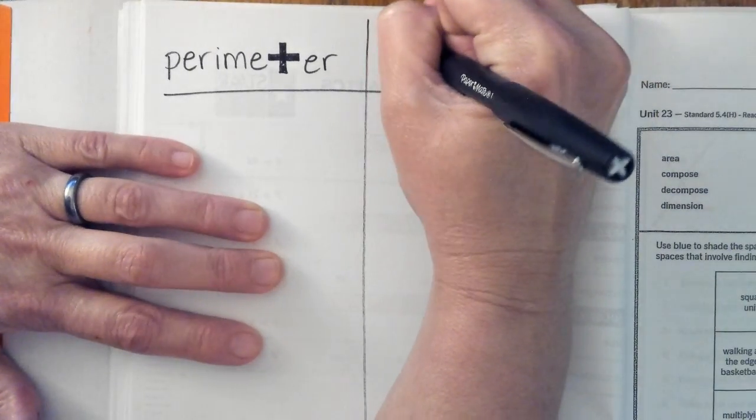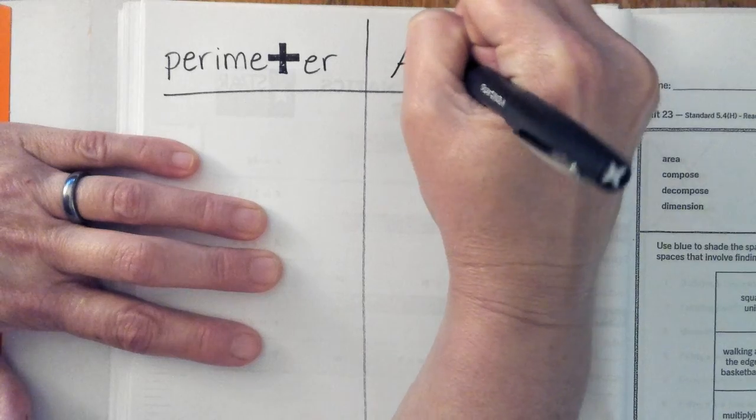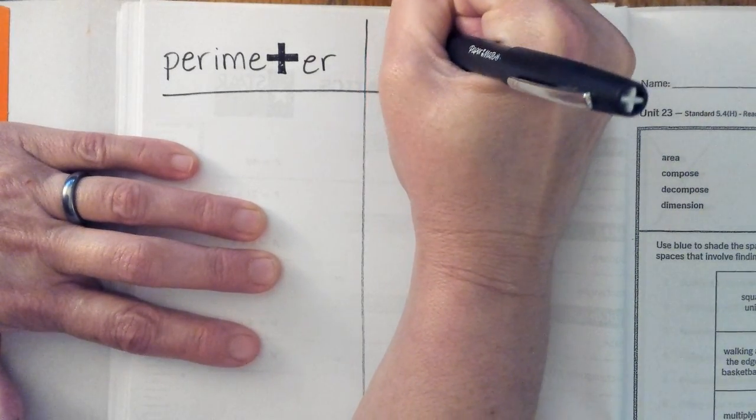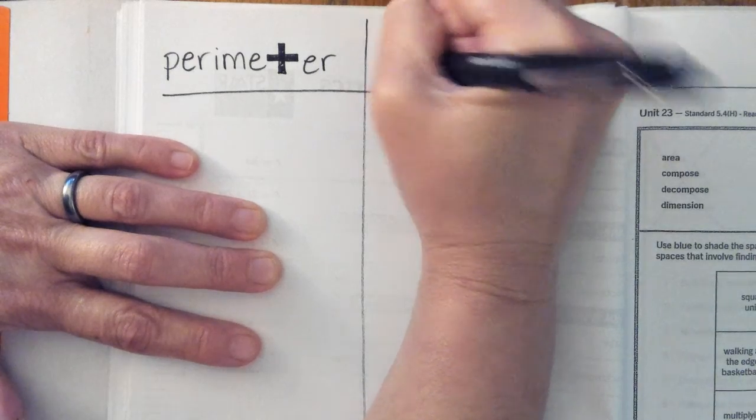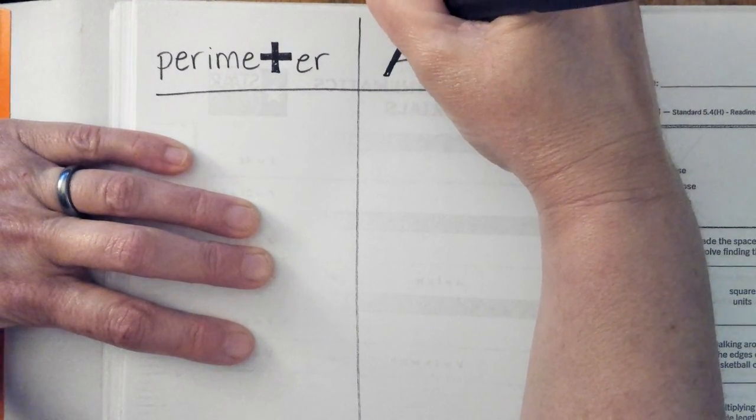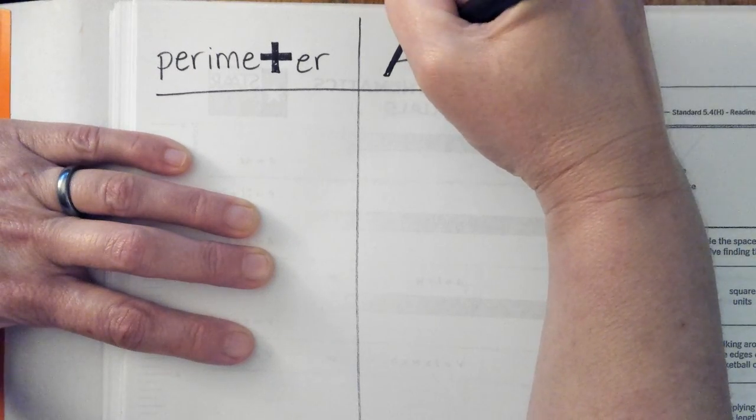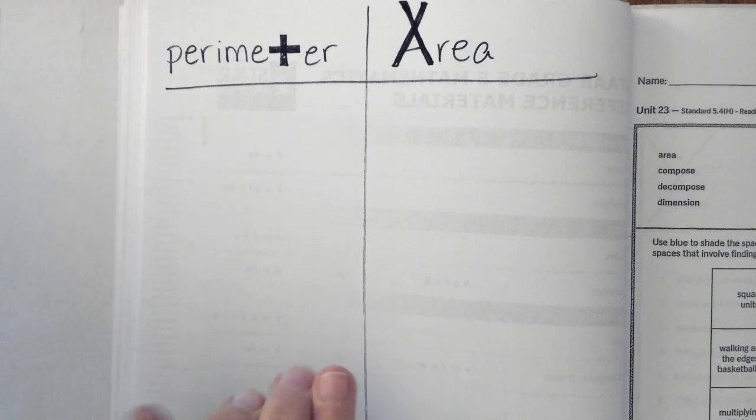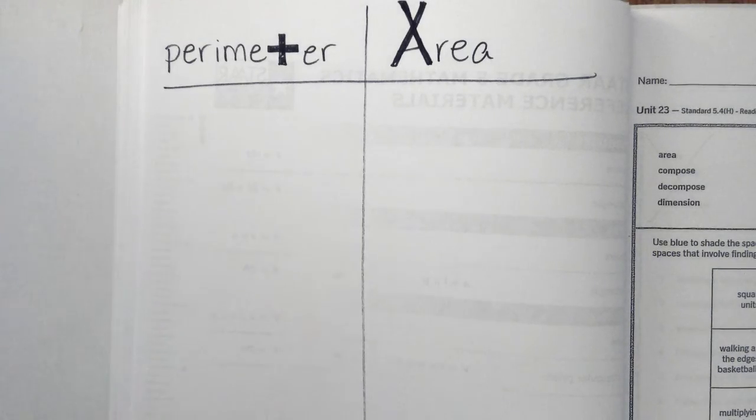And then area, write it with a capital A, and if you write area with a capital A, then you can kind of extend the A to make it look like a times sign. And that's just a visual way to remember that when you're doing perimeter you add, and when you're doing area you multiply.